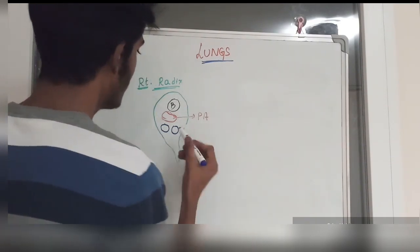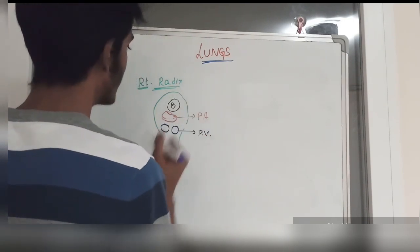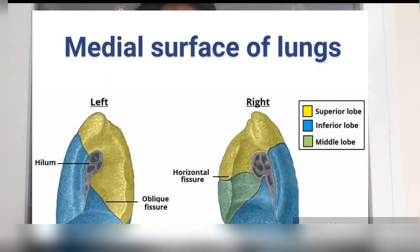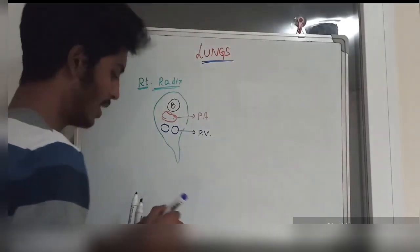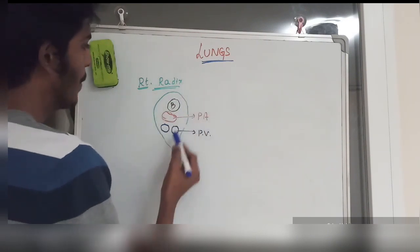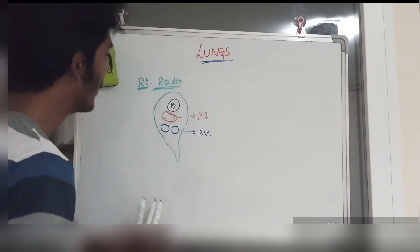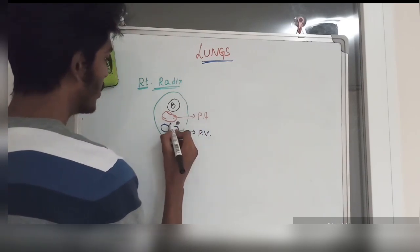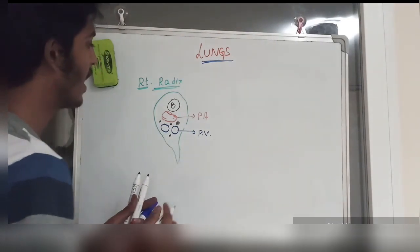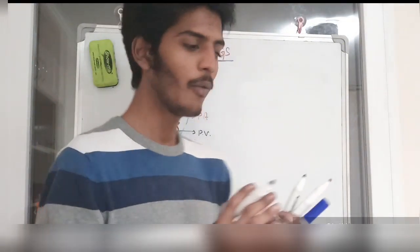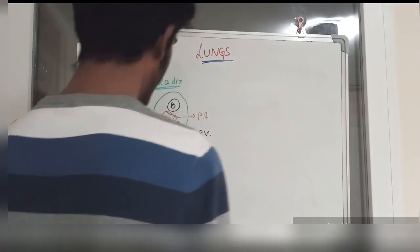So in the right lung root: upper position is the bronchus, middle is the pulmonary artery, and lower is the pulmonary vein. Between these structures, the hilar lymph nodes are located. This region is called not only the radix of the lung but also the hilum of the lung.